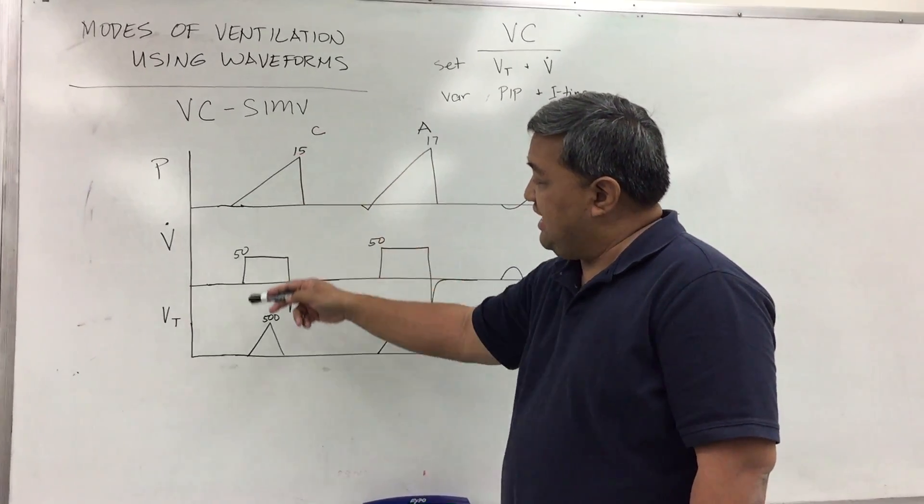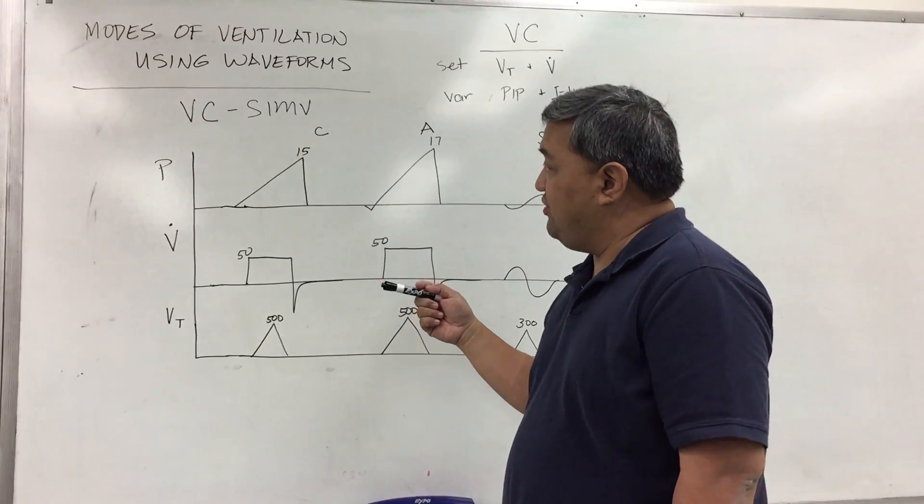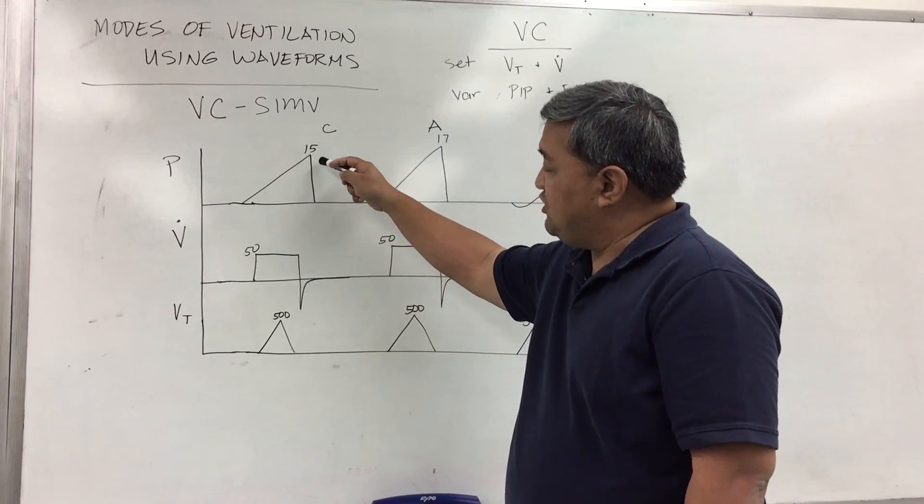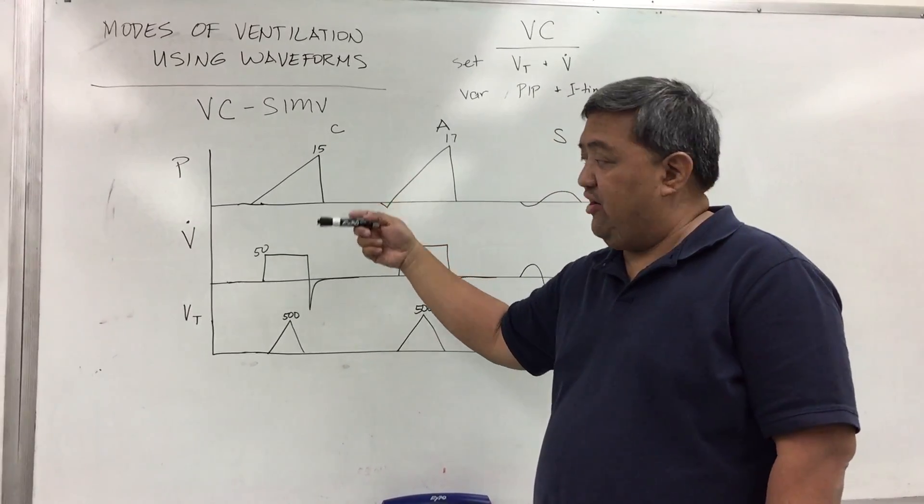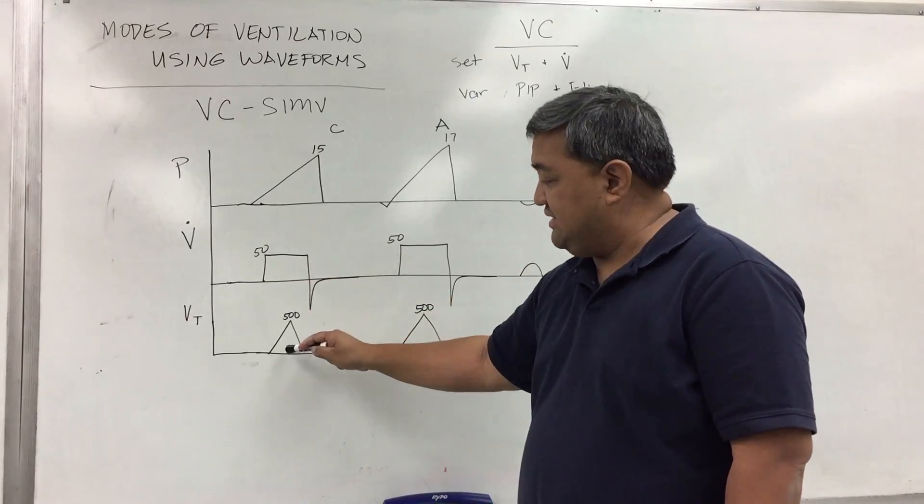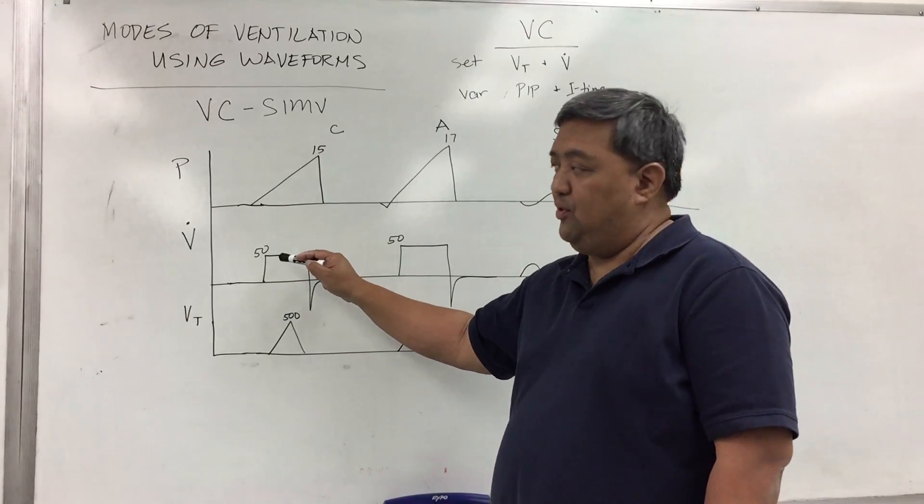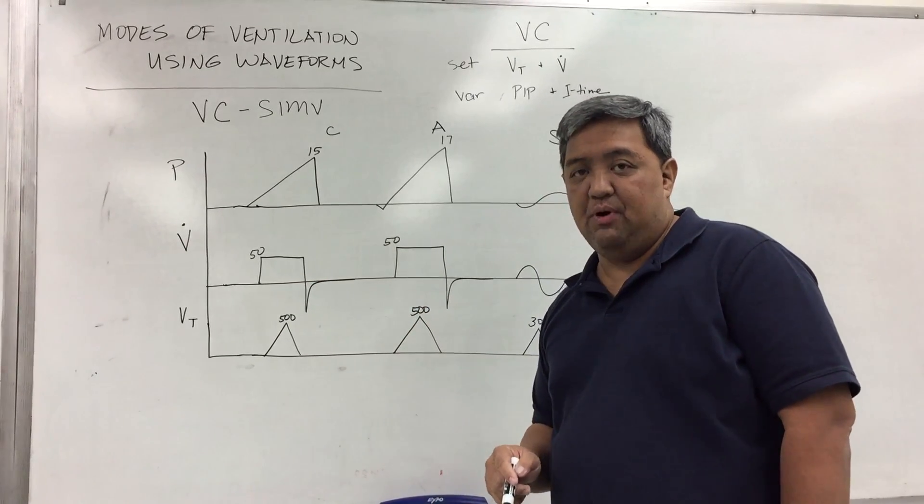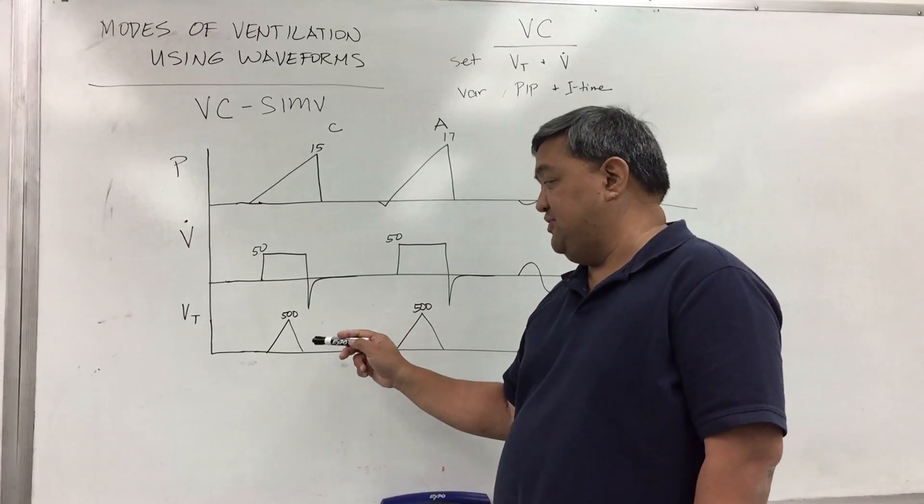So in this example here on the first breath, which is the controlled breath, you have a pressure of 15, again it can be variable, with a set flow and a set tidal volume. Here in our example the set flow is 50 liters per minute and the set tidal volume is 500 mL.